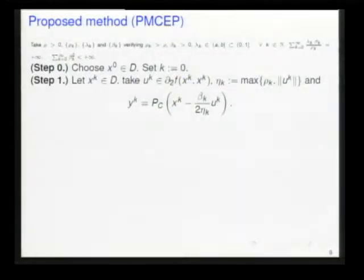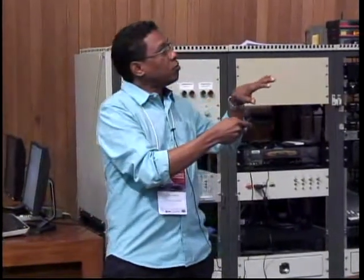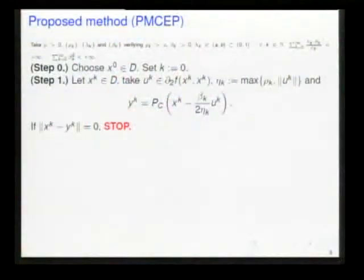Now we present our method. Choose x^0 belonging to D. Take the subgradient and the first projection. Here we emphasize the first difference between this algorithm and the algorithm proposed by Sensor. We include a stop criteria. If x^k equals y^k, then x^k is a solution.